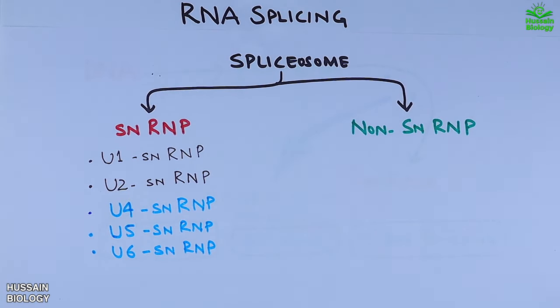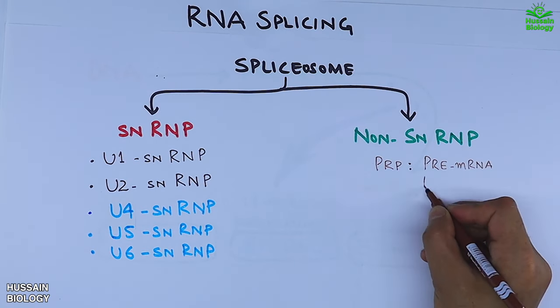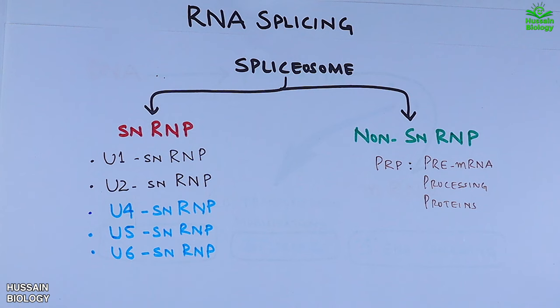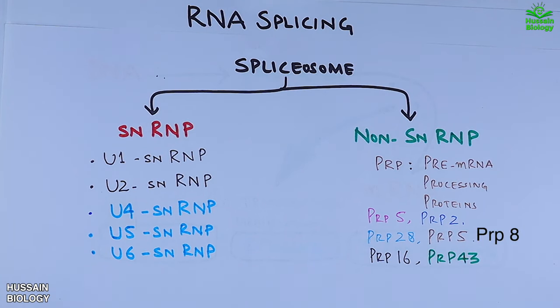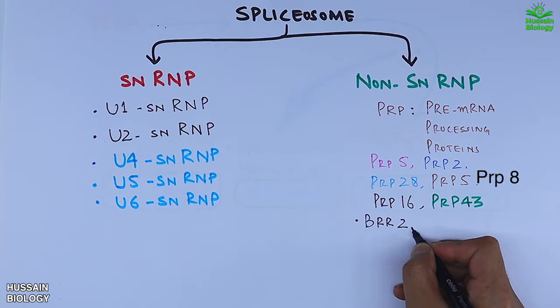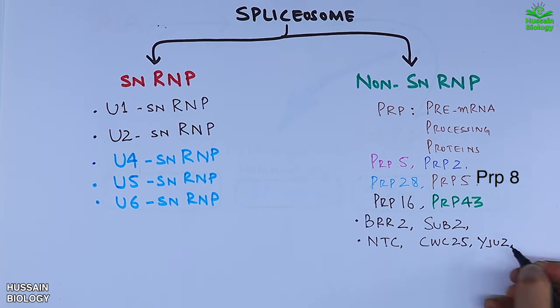Whereas the non-SNRNPs include a plethora of proteins like PRP, that's pre-mRNA processing proteins, which includes PRP5, PRP2, PRP28, PRP16, PRP43. And we have other proteins also like BRR2, sub2, NTC, CWC25, YJU2 proteins and many more.